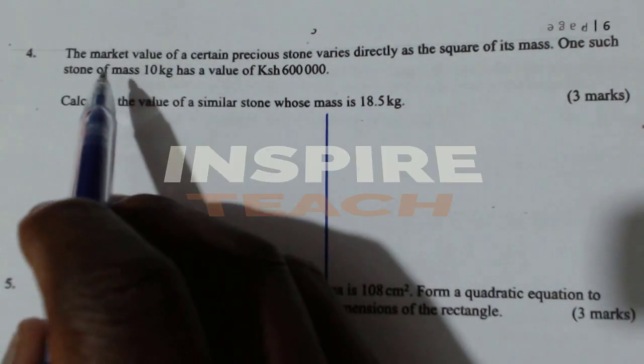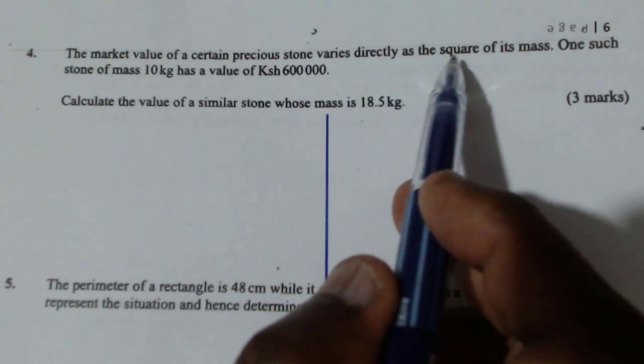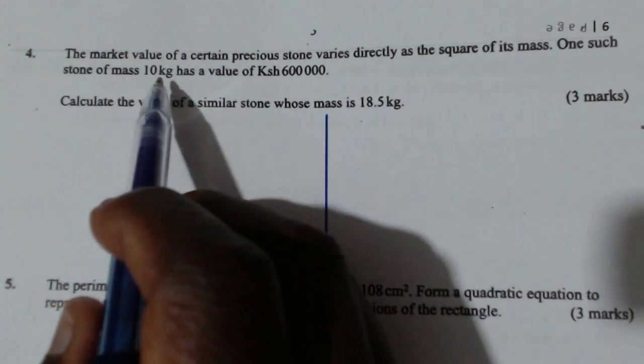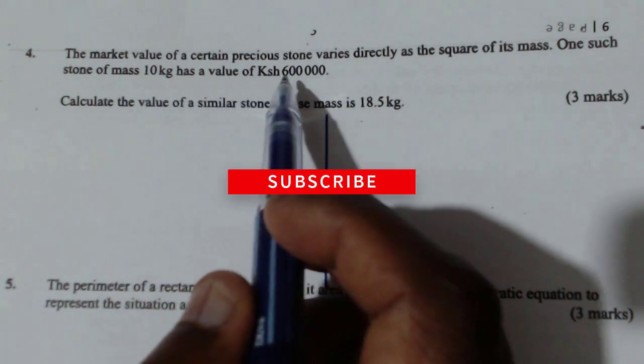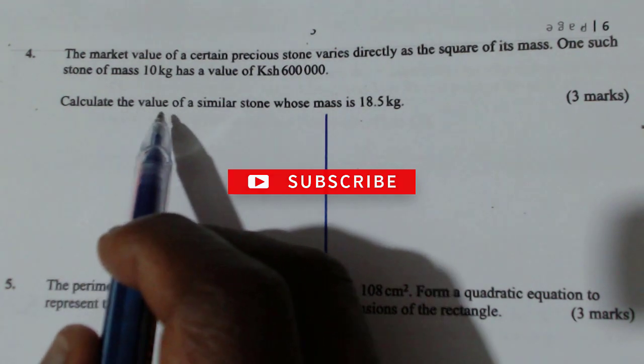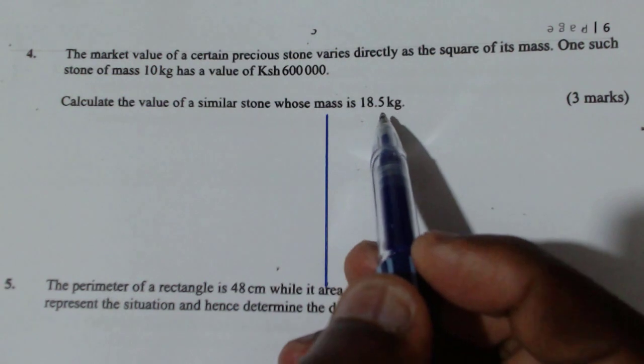Question number four. The market value of a certain precious stone varies directly as the square of its mass. One such stone of mass 10 kg has a value of 600,000 ks. Calculate the value of a similar stone whose mass is 18.5 kg.